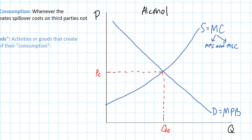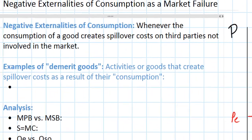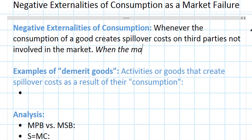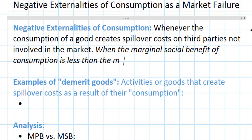The negative externality arises from the consumption of alcohol. The way we show this is by illustrating a marginal social benefit curve that lies to the left of the marginal private benefit curve. There are what we call negative social benefits — costs arising from the consumption of alcohol. Hence our marginal social benefit curve is less than the marginal private benefit. That is the defining characteristic of a negative consumption externality: when the marginal social benefit of a good's consumption is less than the marginal private benefit.